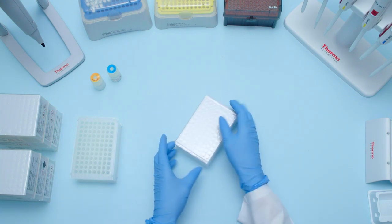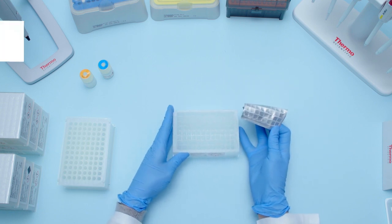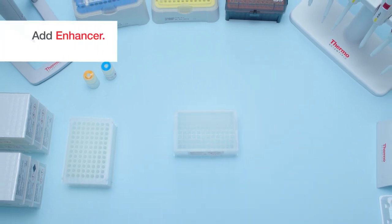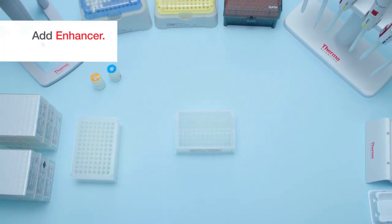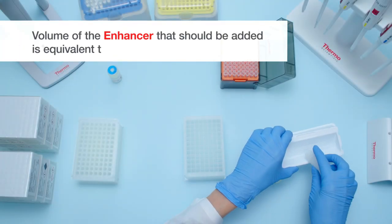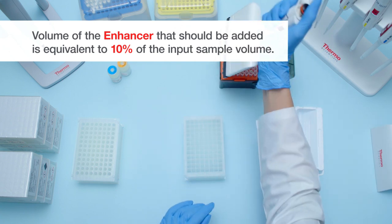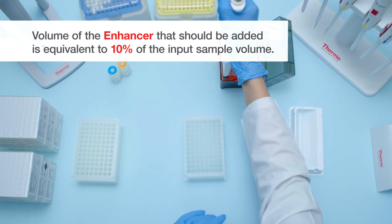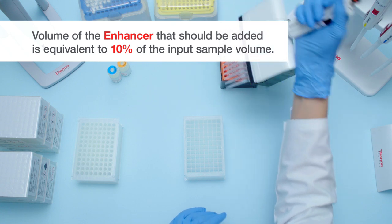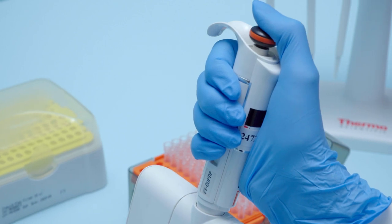Remove seal from FlexReady sample input plate. For blood and other samples, add the Enhancer, 50 to 400 microliters of sample, and PK to the sample input plate. Start by adding Enhancer to each well in the plate. The volume of the Enhancer that should be added is equivalent to 10% of the input sample volume. We recommend using a 12-channel pipetter for fast and easy distribution into each well.